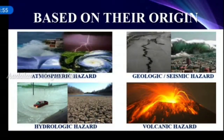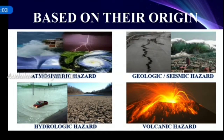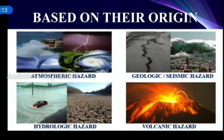Let us see the hazards based on their origin. Hazards can be grouped into eight categories. First, atmospheric hazard, that is tropical storms, thunderstorms, lightning, tornadoes, avalanches, heat waves, fog and forest fires. Second, geologic or seismic hazard with reference to the earth's surface: earthquakes, landslide and land subsidence.